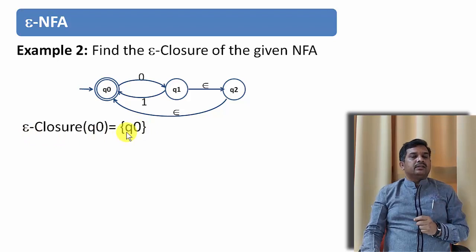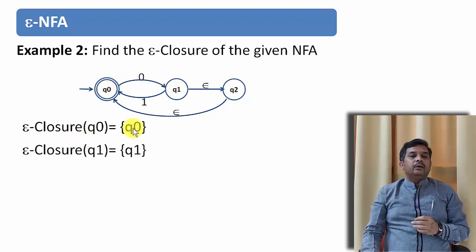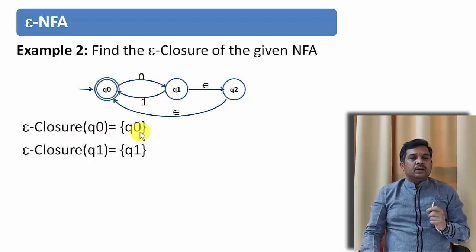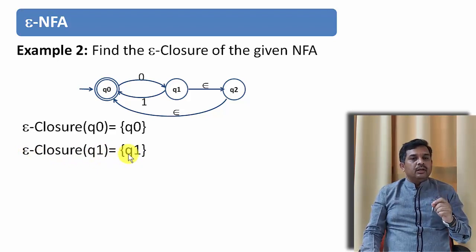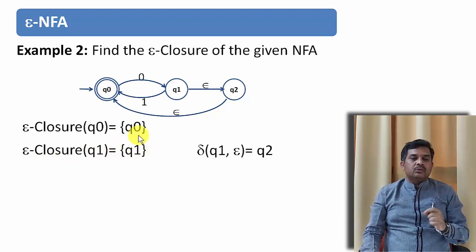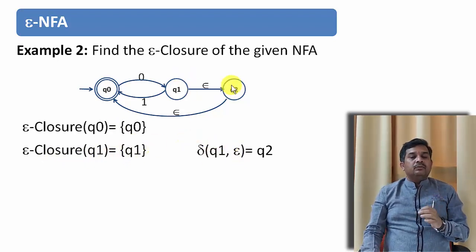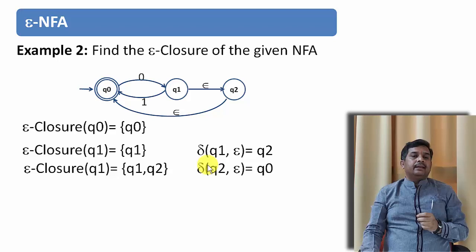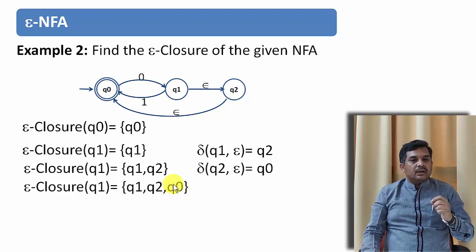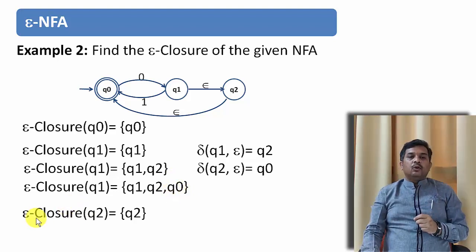Let us take one more epsilon-NFA and try to find the epsilon closure of each and every state. Epsilon closure of Q0 is Q0 itself, fine, because of property 1. And there is no epsilon transition here, and we will not get any more epsilon moves here. So epsilon closure of Q0 is Q0 only. Let us try to find epsilon closure of Q1. According to the first rule epsilon closure of any state is itself. So epsilon closure of Q1 is Q1. And having epsilon move on Q1, I can move to Q2. So this Q2 will be added to the existing epsilon closure. So epsilon closure of Q1 becomes Q1 and Q2. Now let us take epsilon move on Q2. It is Q0. Now add this Q0 to the existing epsilon closure. So epsilon closure of Q1 becomes Q1, Q2, and Q0. I hope you understood this.